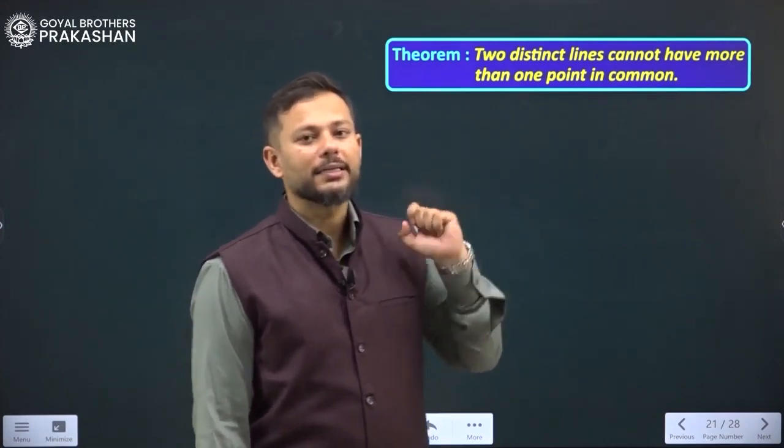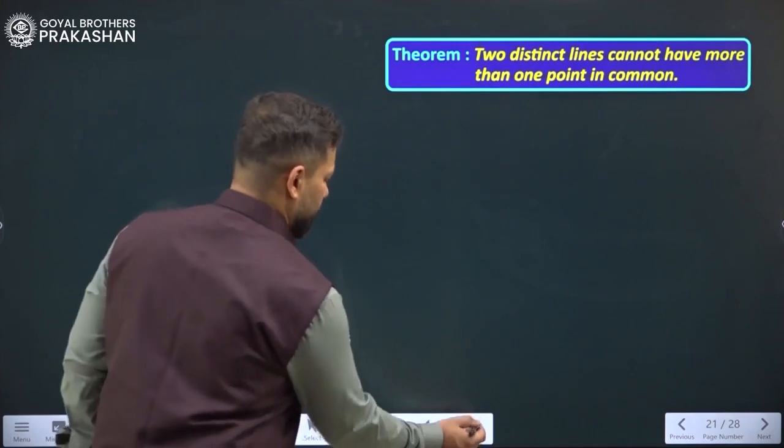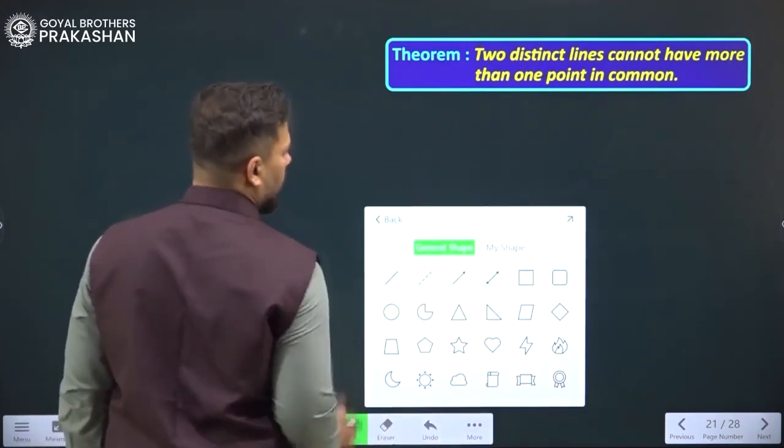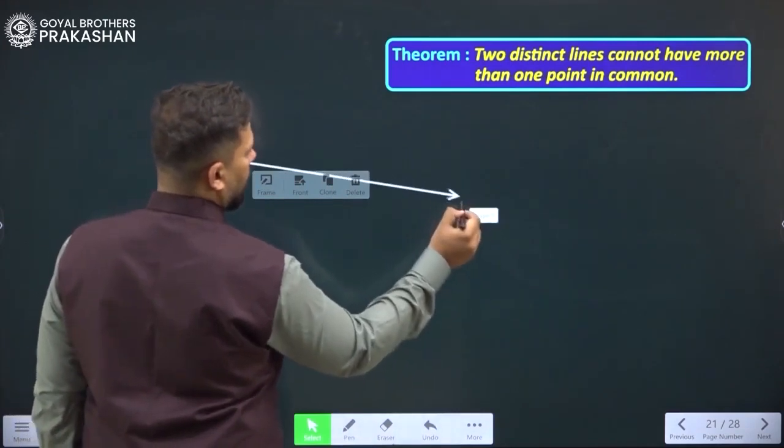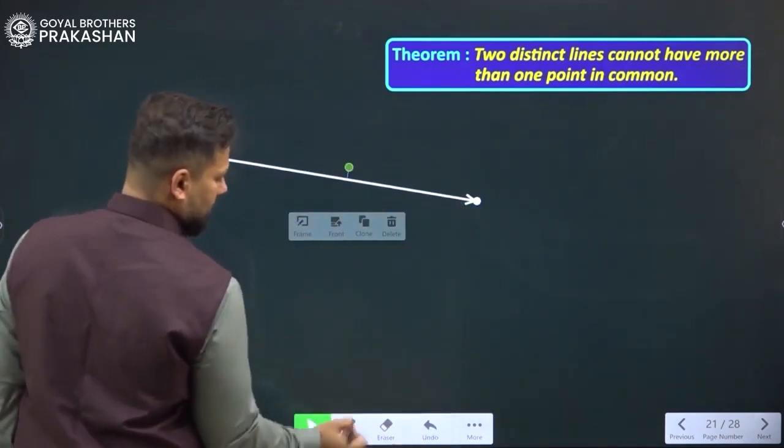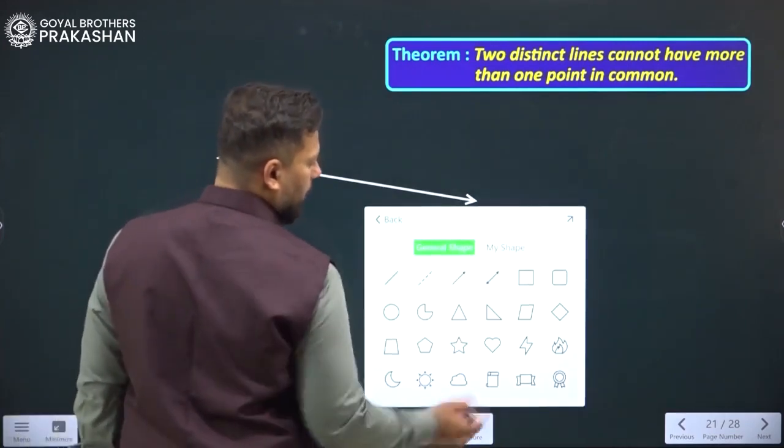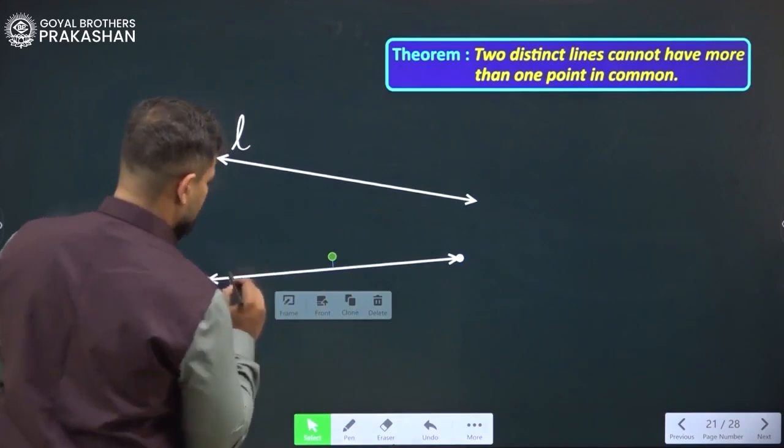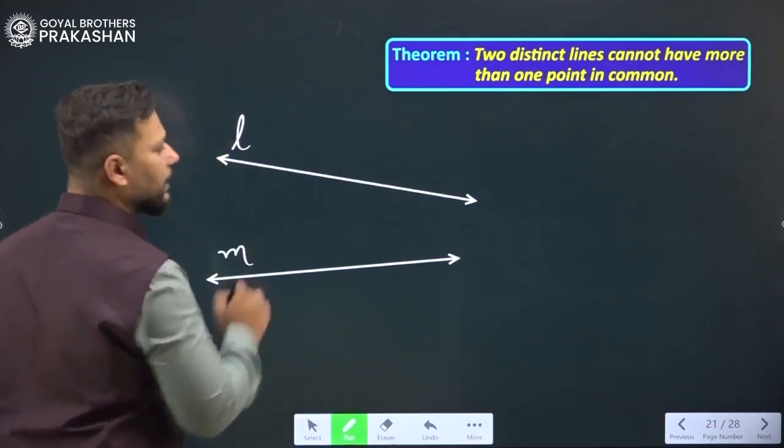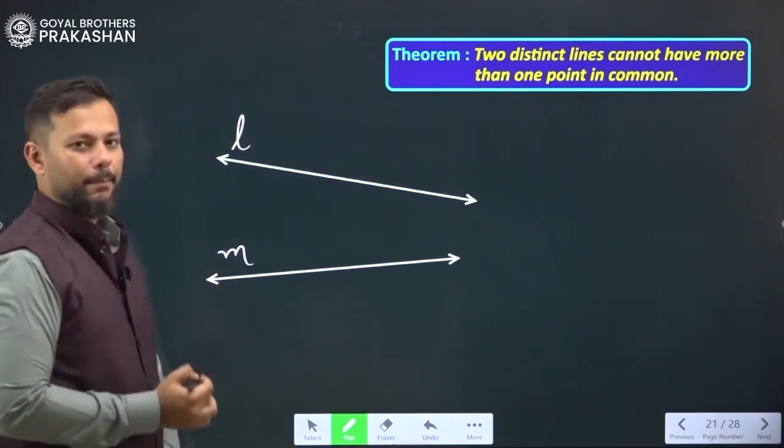Let us try to understand this. Let us first make two distinct lines. So here is my first line. Let us name it as line L and let us have one more line which is line M. Here it is. Let us name it as line M. So aren't these two distinct lines, line L and line M.